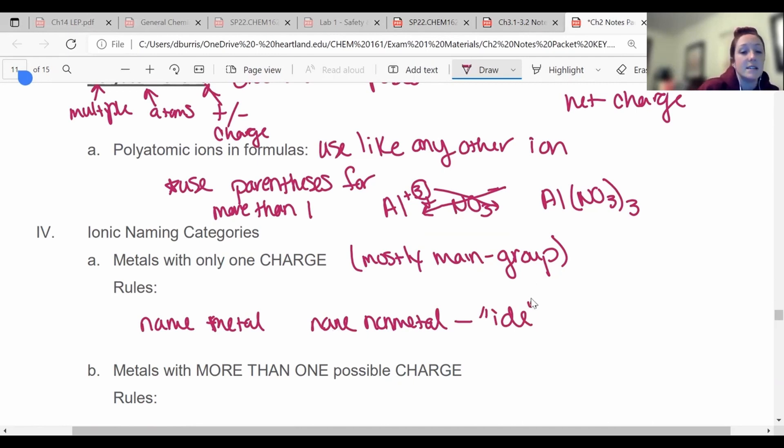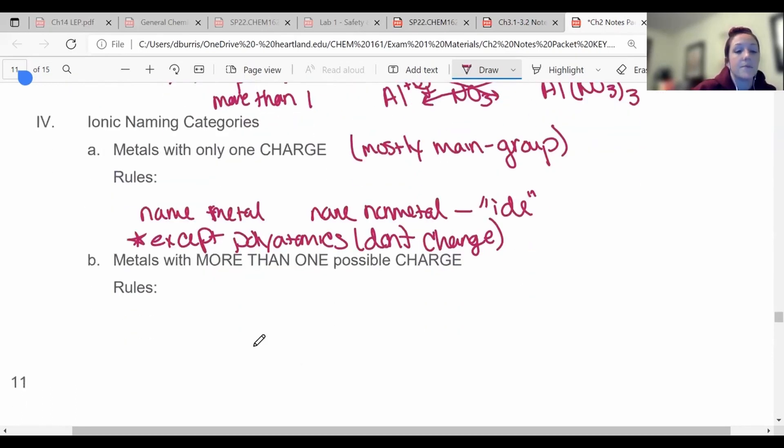Now the only time you don't change the IDE is if it's got a polyatomic ion. So except polyatomics do not change their names. Don't change. So for example, NO3 is called nitrate. I would just leave that nitrate. I would not change it to IDE. That's the only time you don't change it.